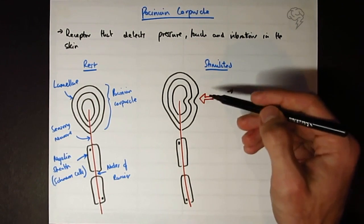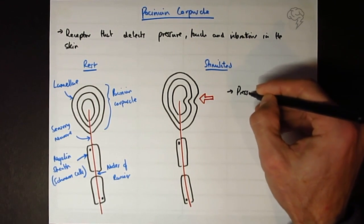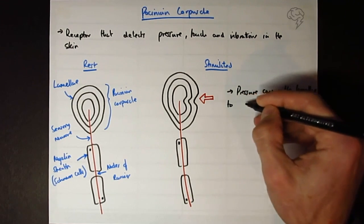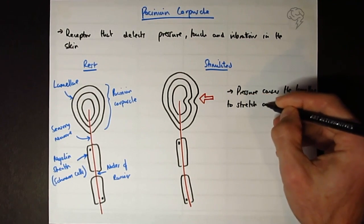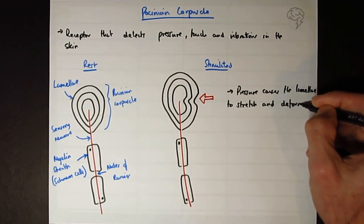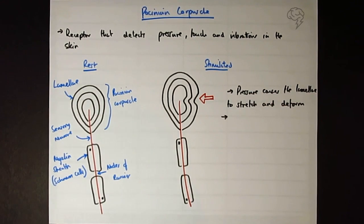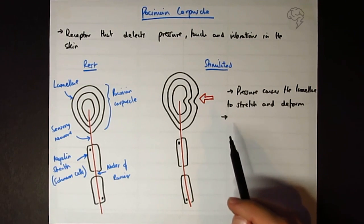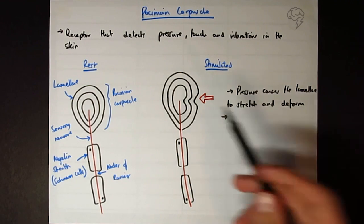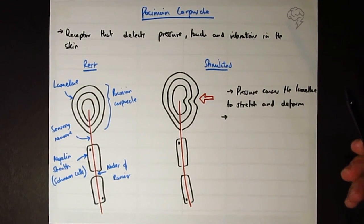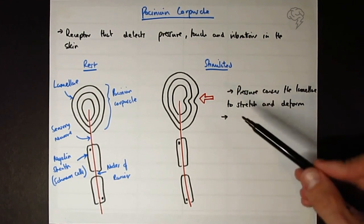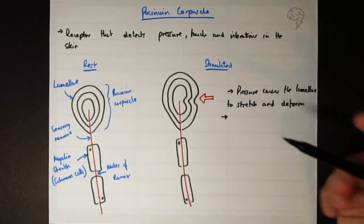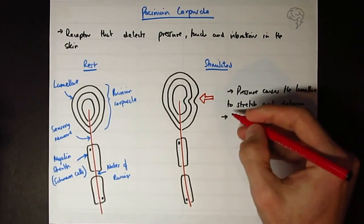We can say pressure causes the lamellae to stretch and deform. Now, we can say with every type of receptor, there's going to have a sodium ion channel that opens in response to the stimulus, and obviously the stimulus here is pressure. So we can say that stretch-mediated sodium ion channels open. I'm actually going to put them in red.